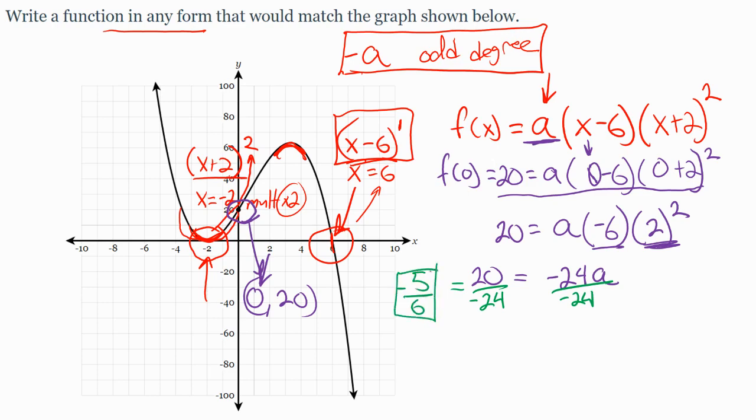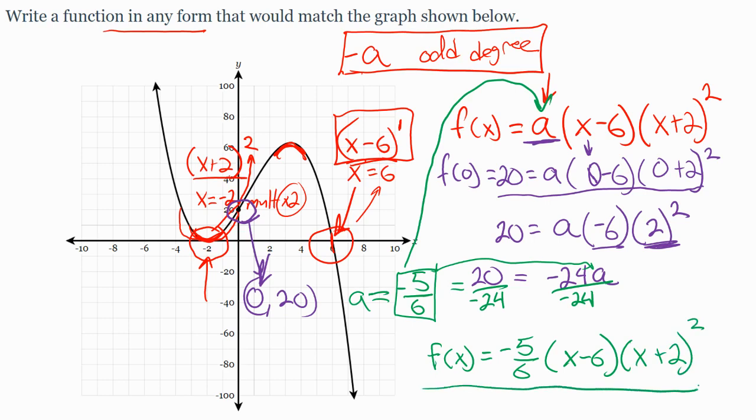So that's a, not my overall answer, just the answer for a. So I replace a up top. As soon as I replace a up top, I have my answer for this polynomial, which is f of x equals negative 5 sixths times x minus 6 times x plus 2 squared. That is my factored form version of this polynomial. If I was to graph that, I would produce exactly this function.